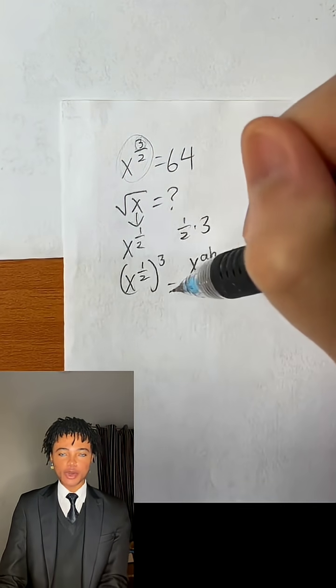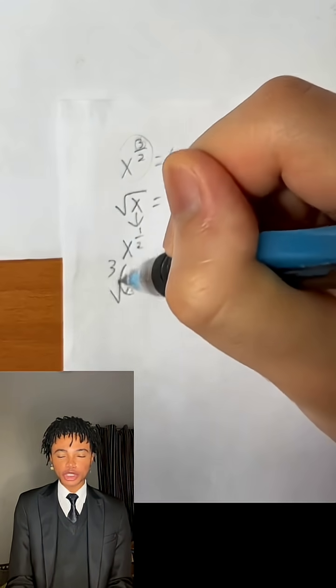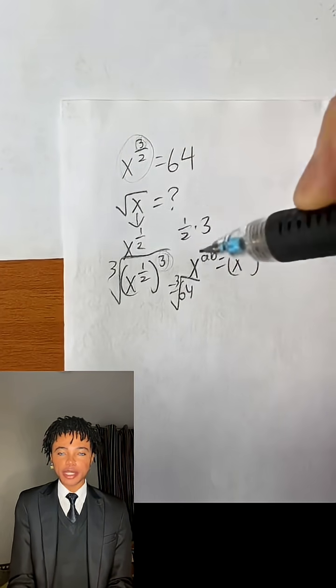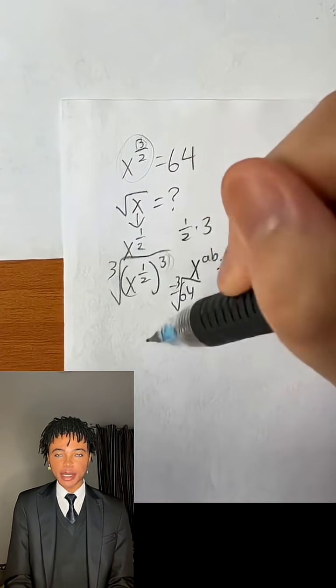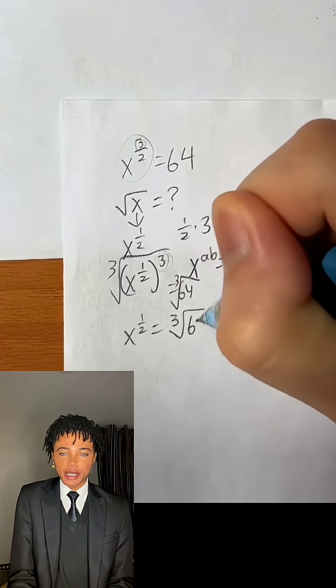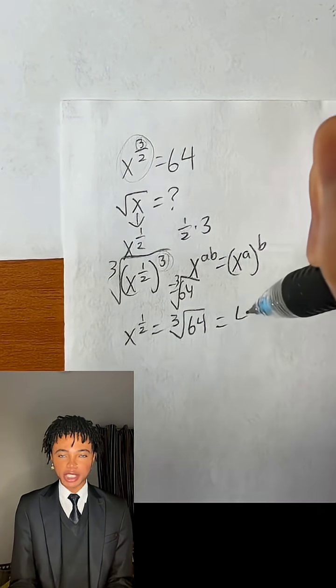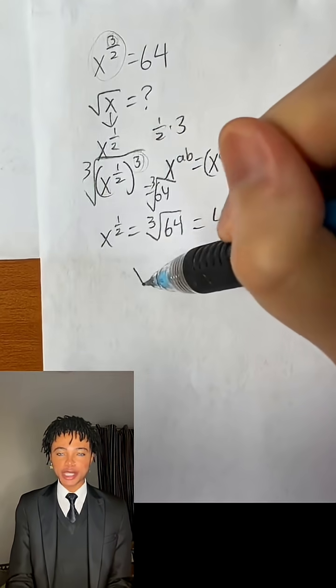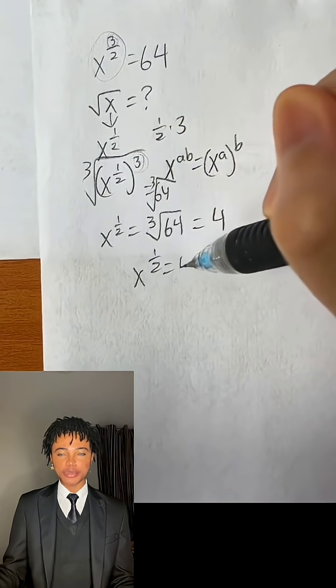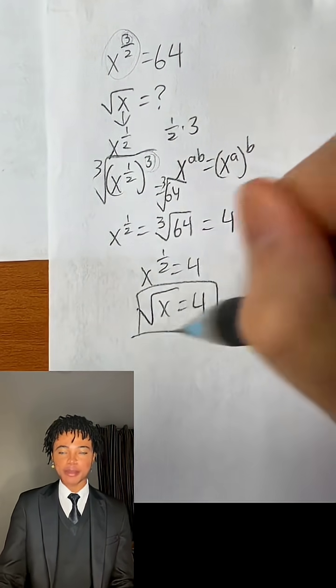So then we know that this is equal to 64, and what we're going to do to get rid of this 3 is by cube rooting both sides. And then that will give us x raised to the 1 half power equals the cube root of 64. And the cube root of 64 is going to be equal to 4. So that would mean that x raised to the 1 half power equals 4, or the square root of x is equal to 4, which is our answer.